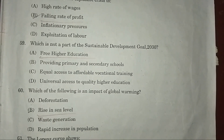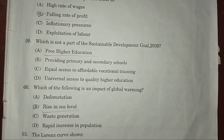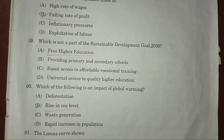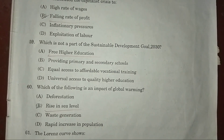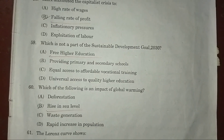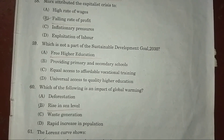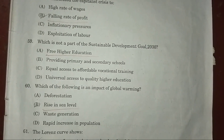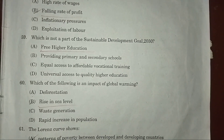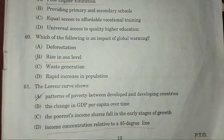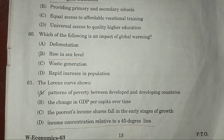Question 59: Which is not a part of the Sustainable Development Goals (SDGs) 2030? Answer: A — higher resolution. Question 60: Which of the following is not an impact of global warming? Answer: B — rise in sea level.